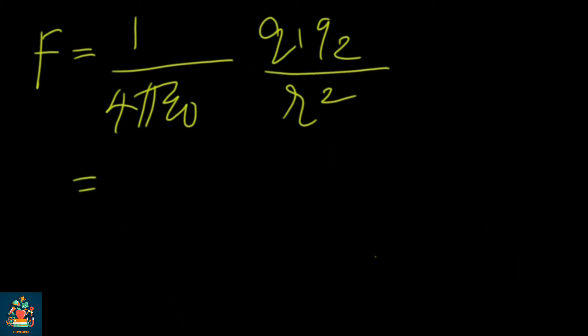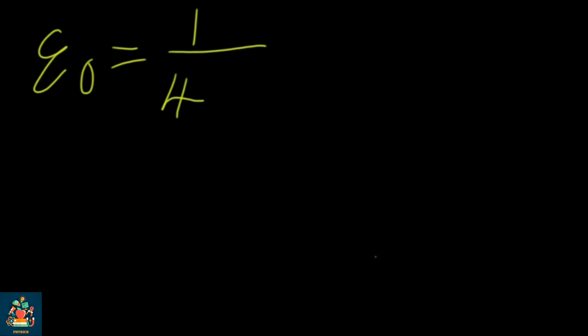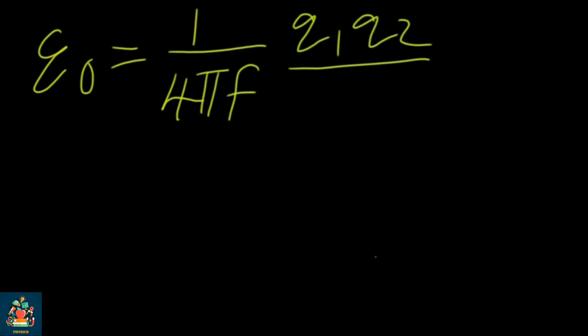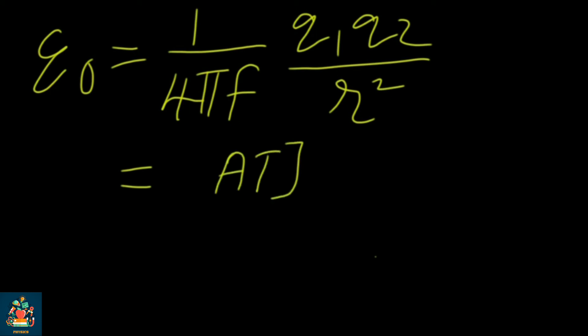Now let's talk about the dimensional formula. In a similar way, let's take a look at epsilon zero. We change the equation: epsilon zero is equal to 1 by 4 pi F into q1 q2 by r square. Now let's determine the dimensional formula from this expression.